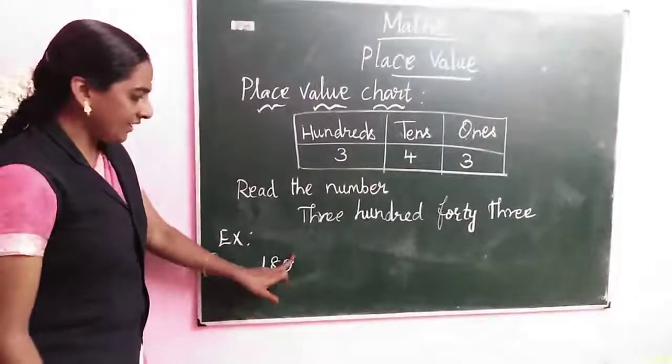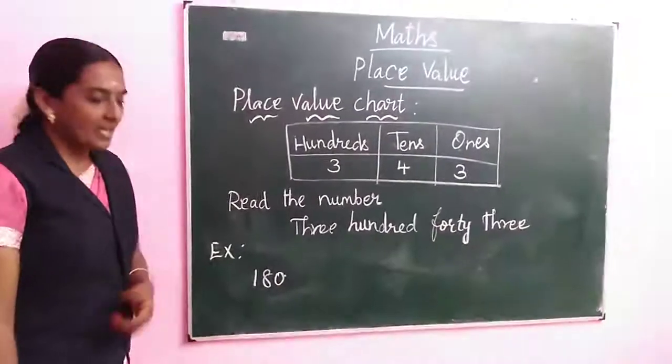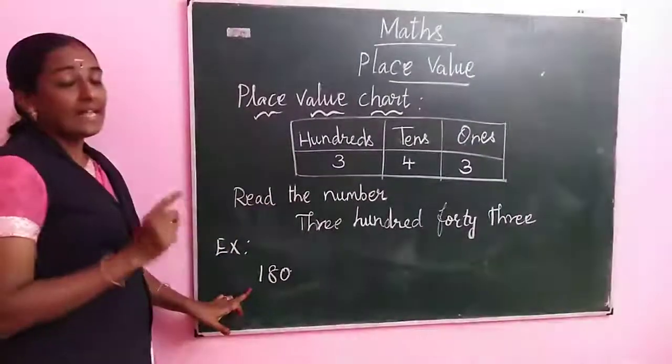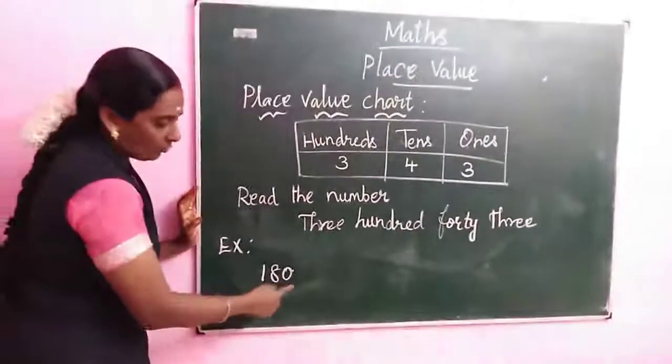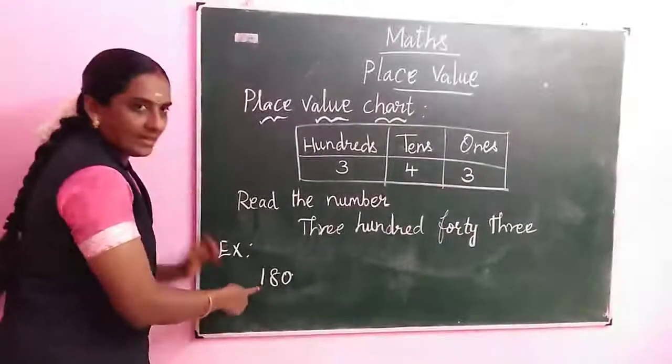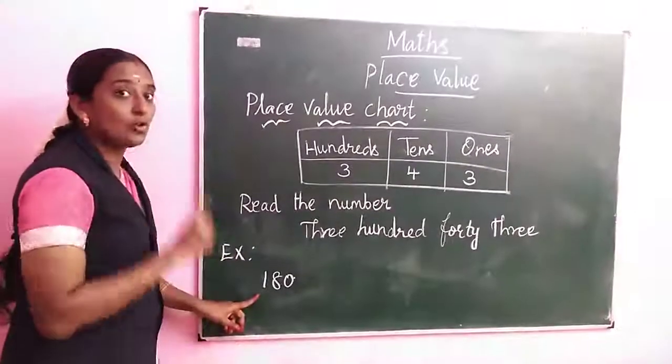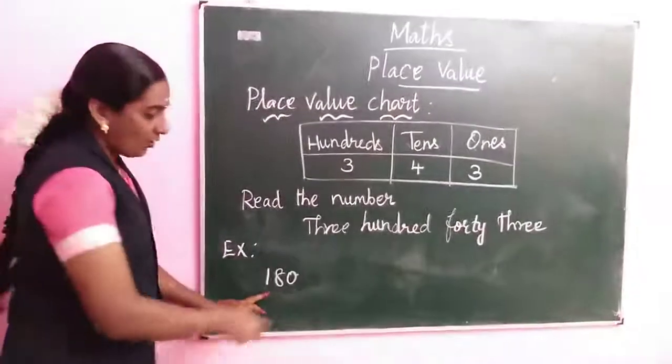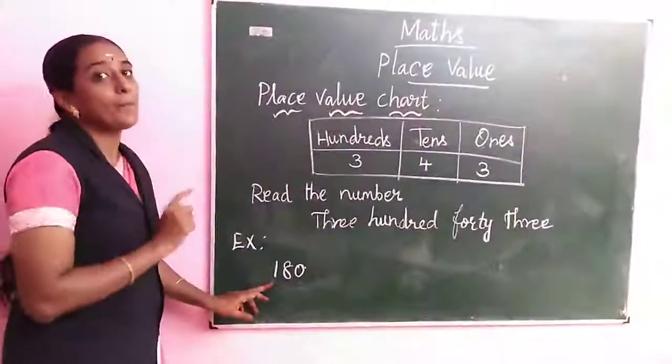1, 8, 0. Now how to read? I said take the first highest place value. 100 place: 1, 10, 100. 100 is your highest value. Don't listen to the highest number. We want to take the highest place value.